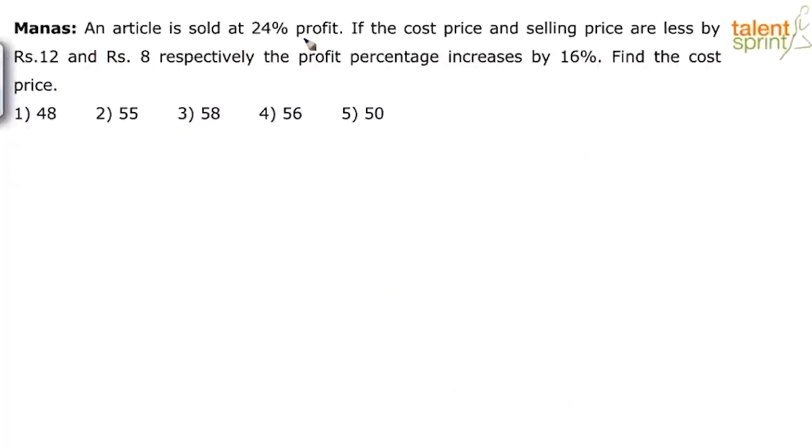An article is sold at 24% profit. If the cost price and selling price are less by rupees 12 and rupees 8 respectively, the profit percentage increases by 16%. Find the cost price.